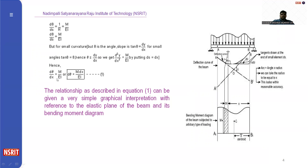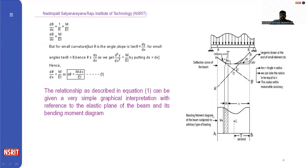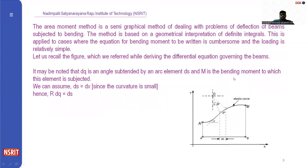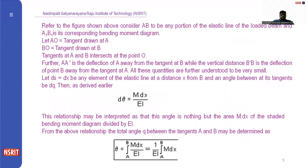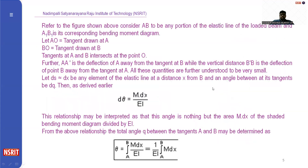Where d(theta) is the moment times dx divided by EI. The relation described in Equation 1 is the graphical interpretation with reference to the elastic plane of the beam. Referring to the figure, A to B is the elastic line and A1 to B1 is the corresponding bending moment diagram.